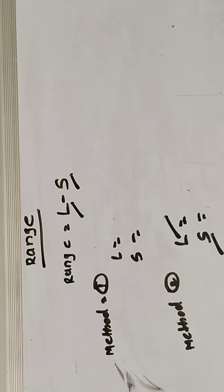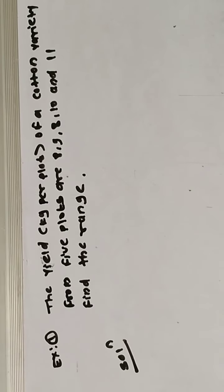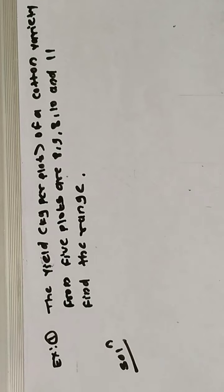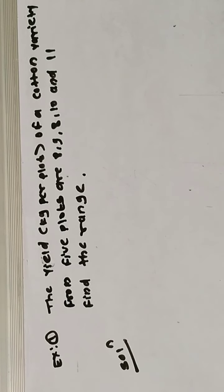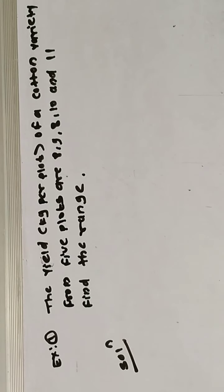Friends, see here we take one example. The yield in kg per plot of a cotton variety from five plots are 8, 9, 8, 10, and 11. Find the range of this cotton variety.